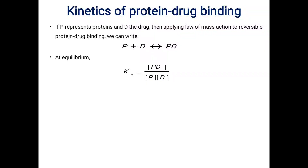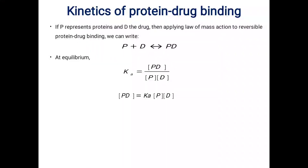If a drug has a higher value of Ka, it represents that a higher amount of drug will be bound to the proteins, and very less concentration will be available in the unbound form to show its pharmacological action. So for drugs which have higher Ka values, higher doses are to be administered. The dose of a particular drug can also depend upon its binding affinity to the particular protein. From the value of Ka, we can decide at what concentration or dose the drug should be administered. PD can be further written as Ka times P times D.